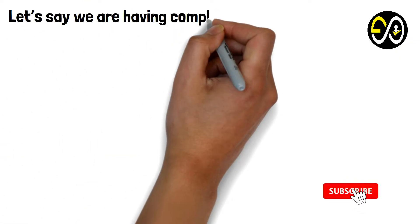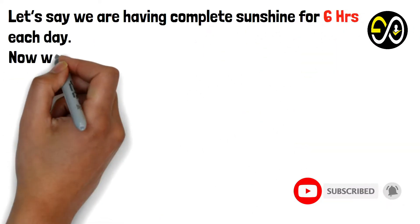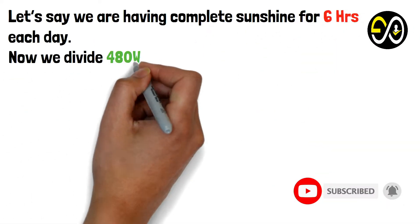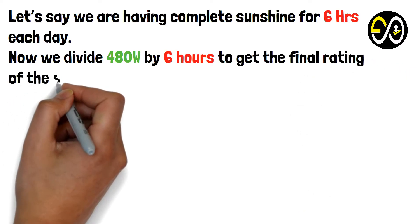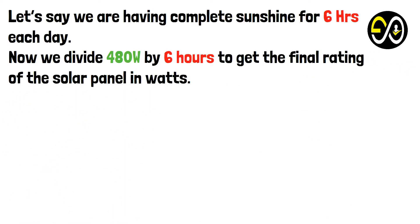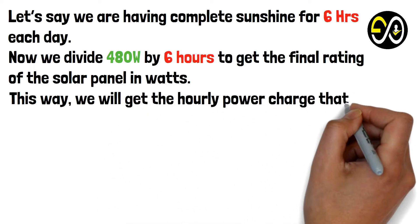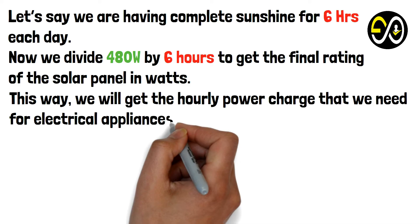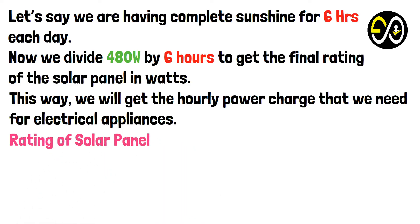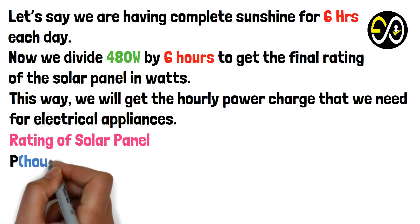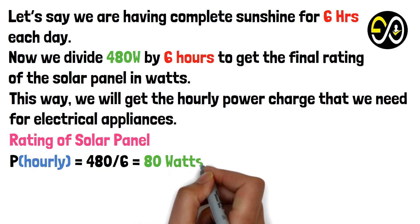Let's say we have complete sunshine for six hours each day. We divide 480 watt-hours by six hours to get the final rating of the solar panel in watts. This gives us the hourly power charge needed for the electrical appliances: P_hourly = 480 ÷ 6 = 80 watts.